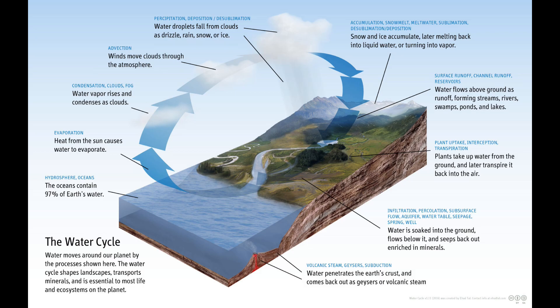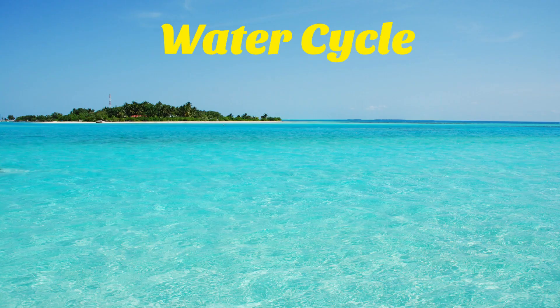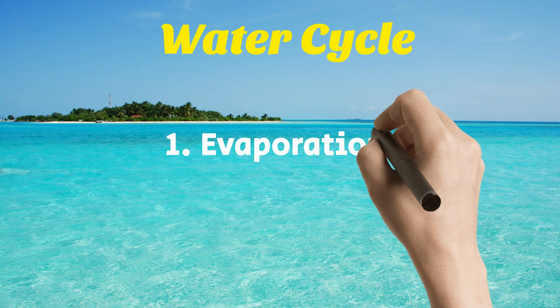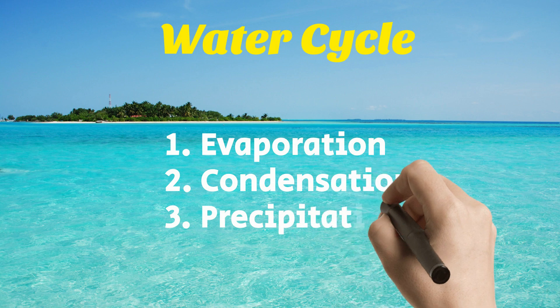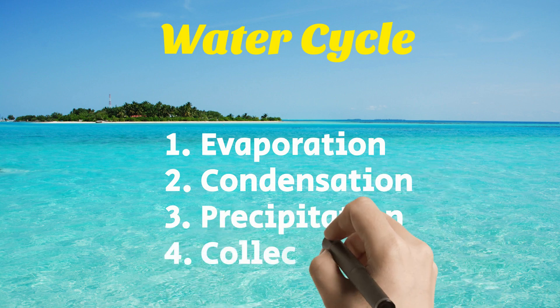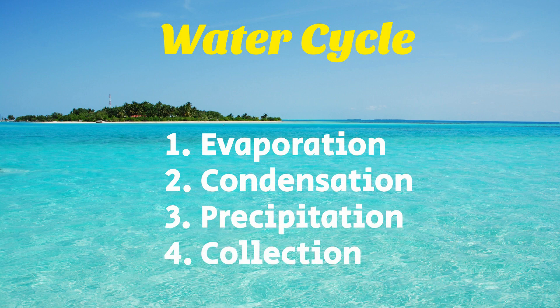And yet despite all of this, why hasn't water run out yet? This is because of the water cycle, which consists of four stages: evaporation, condensation, precipitation, and collection. Let's go through each of these stages in detail.